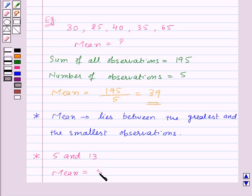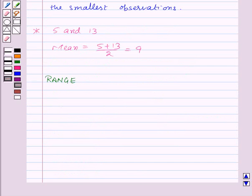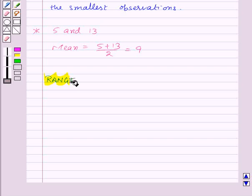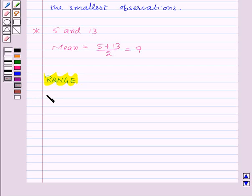Now our next topic is range. If we are given few observations and we need to find out the range of observations, then this will be equal to highest observation minus lowest observation.